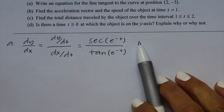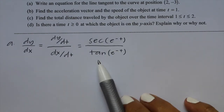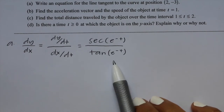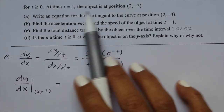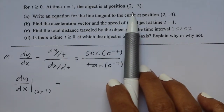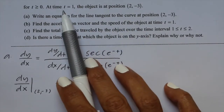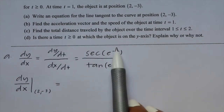We're given dy/dt as secant of e to the negative t, and dx/dt is tangent of e to the negative t. We need to find the slope at the point (2, -3), and from the original problem, (2, -3) corresponds to t equals 1. So we're going to plug in 1 for the t values.